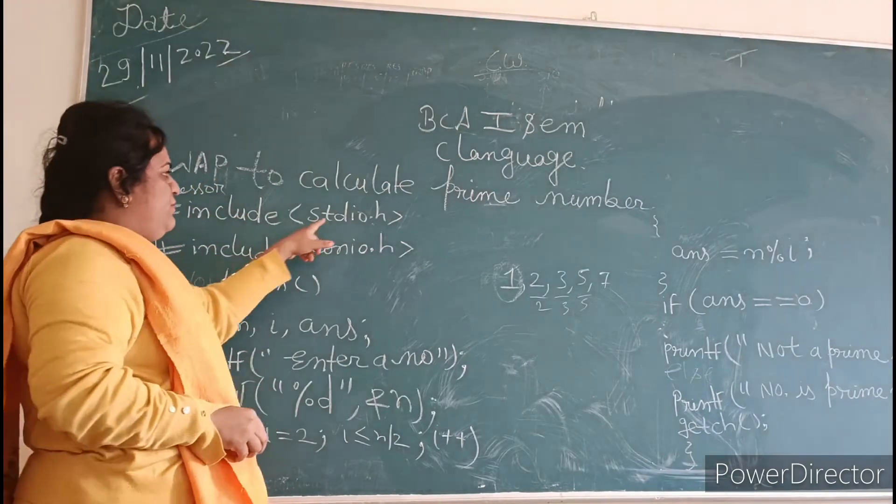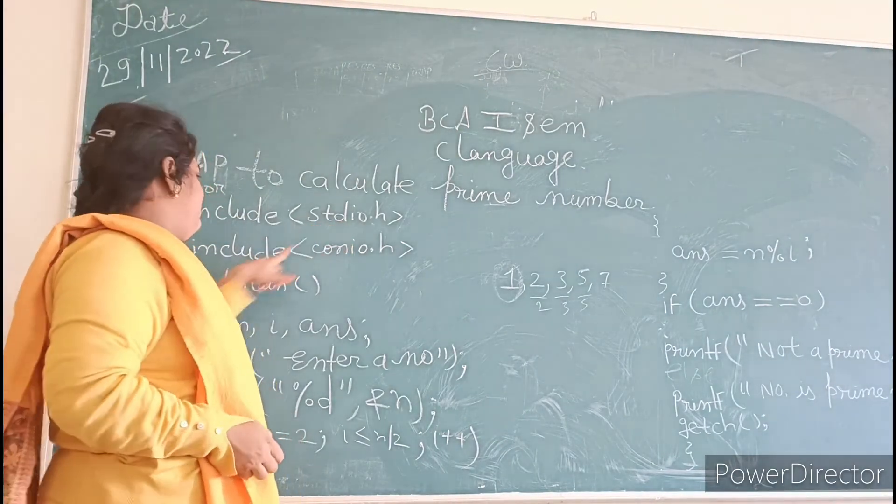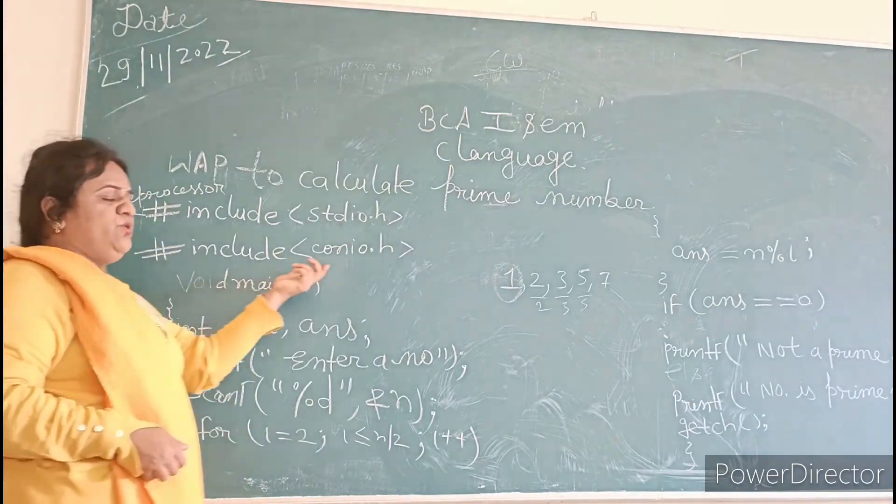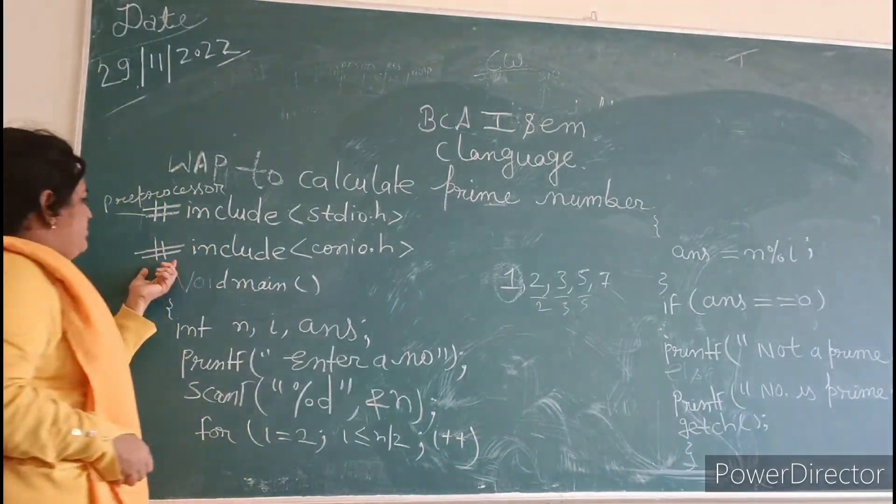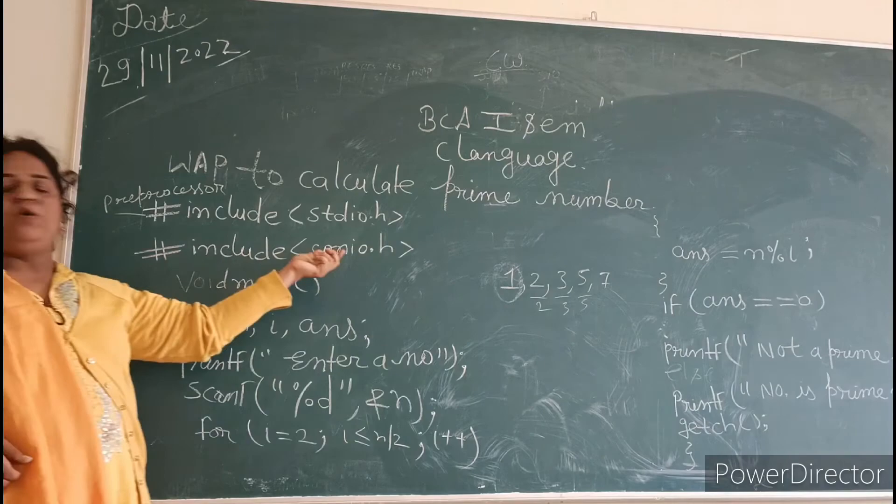And hash include conio.h is for input and output data. So we will write our preprocessor, that is conio.h.